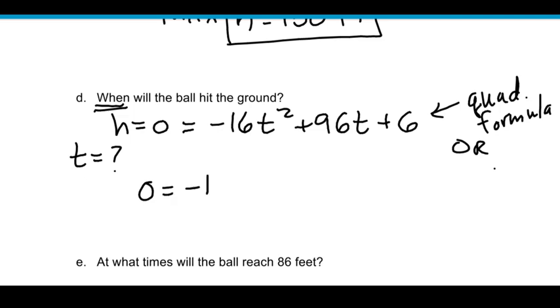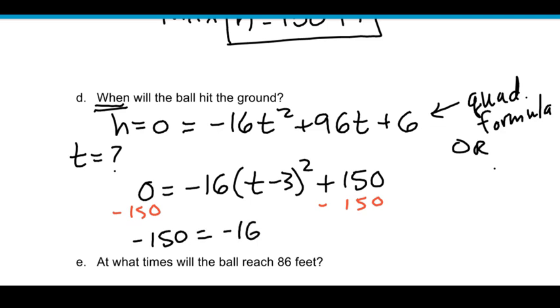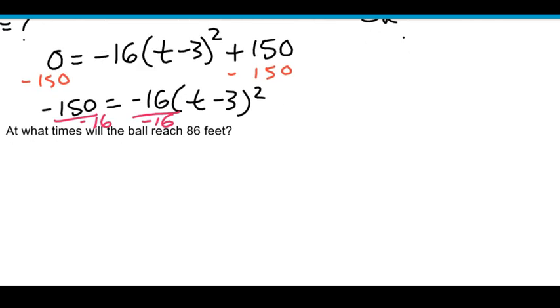Zero is our height now equals negative 16 times t minus 3 quantity squared plus 150. So we're going to solve this using our square root property. So I'm going to go ahead and move over this 150 by subtracting on both sides. And then I'm going to end up dividing out the negative 16. So we have negative 150 equals negative 16 times t minus 3 squared. And then I'll move it over in just a second, but I'm going to divide this negative 16 on both sides.